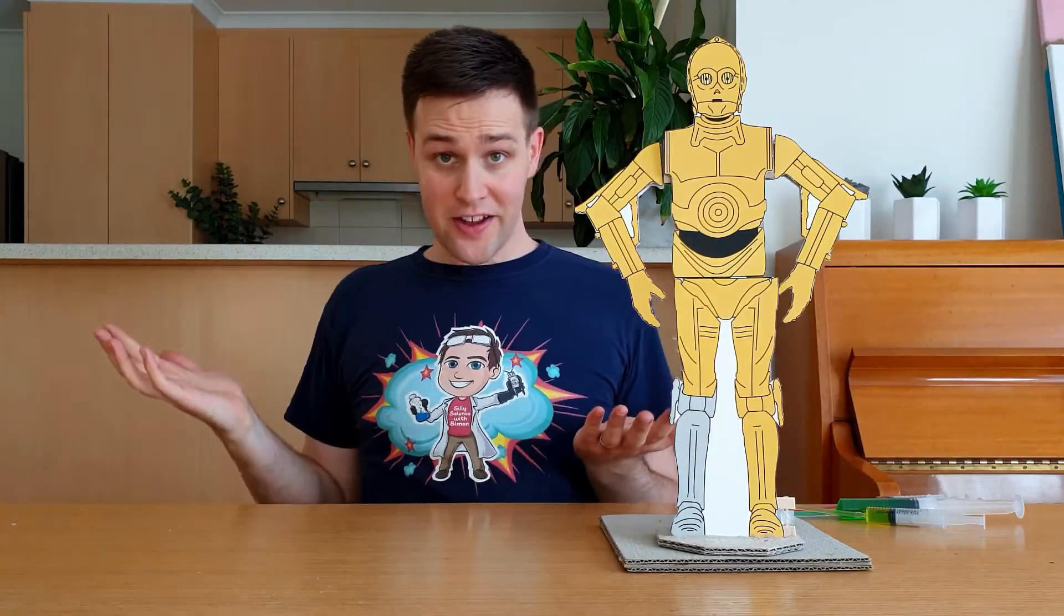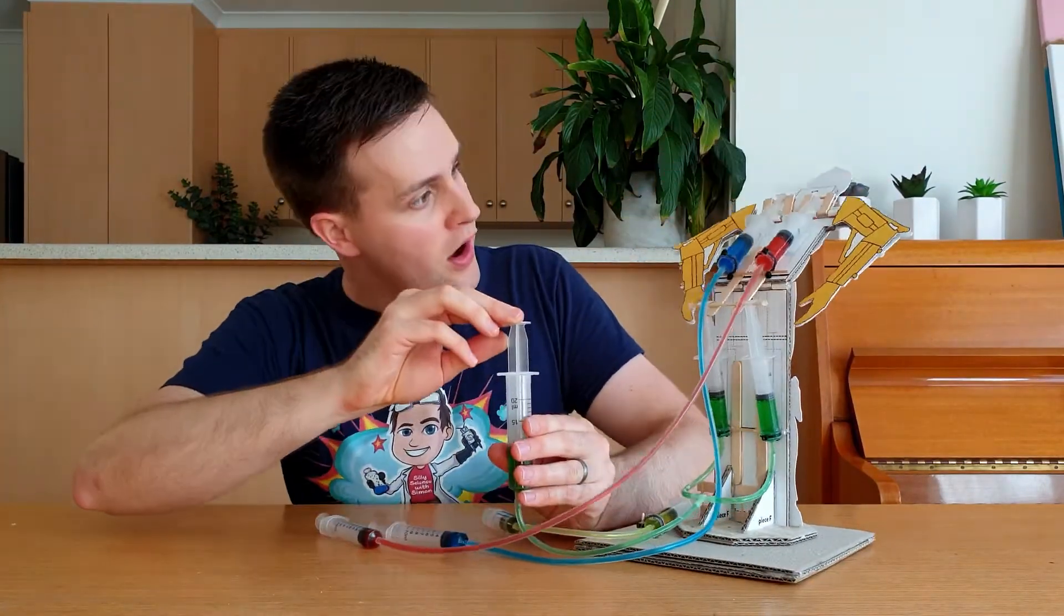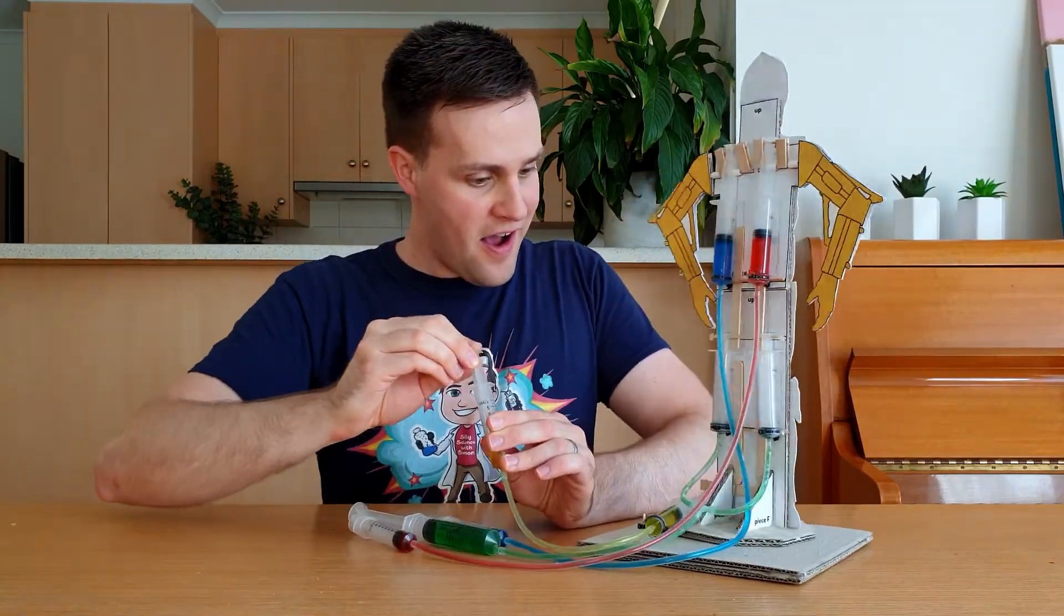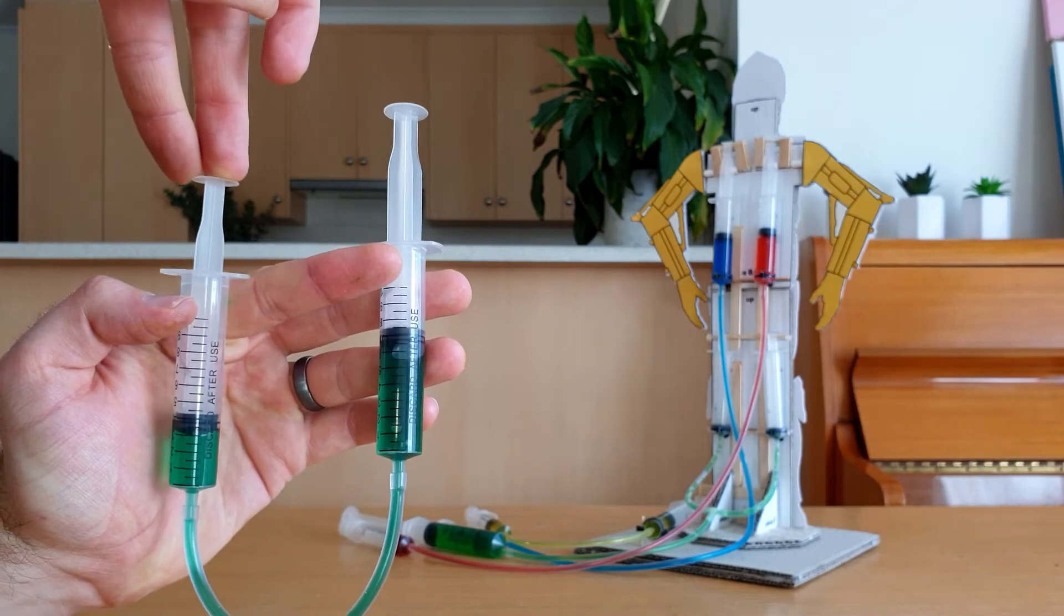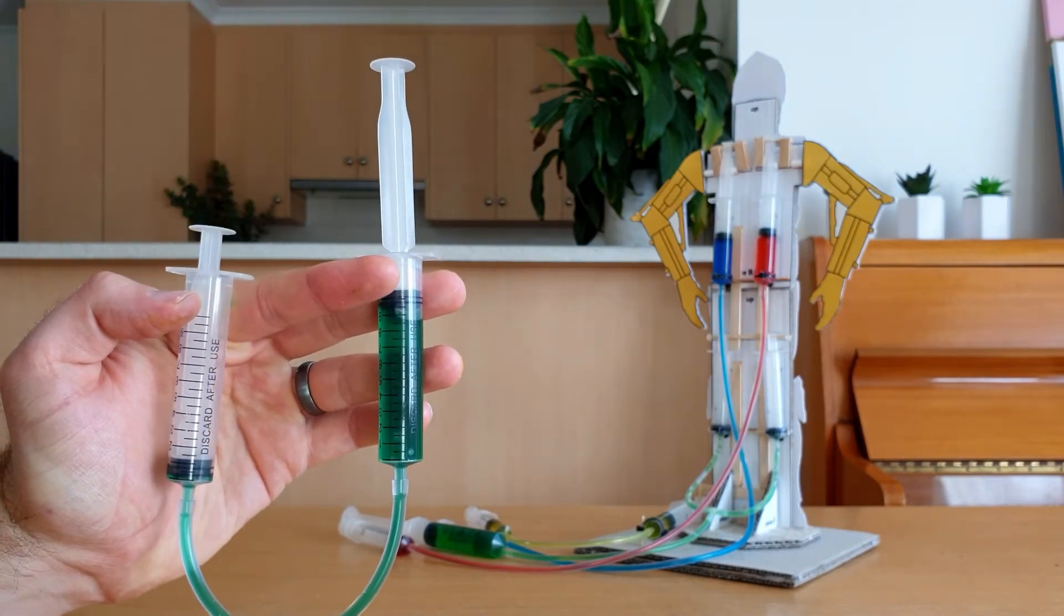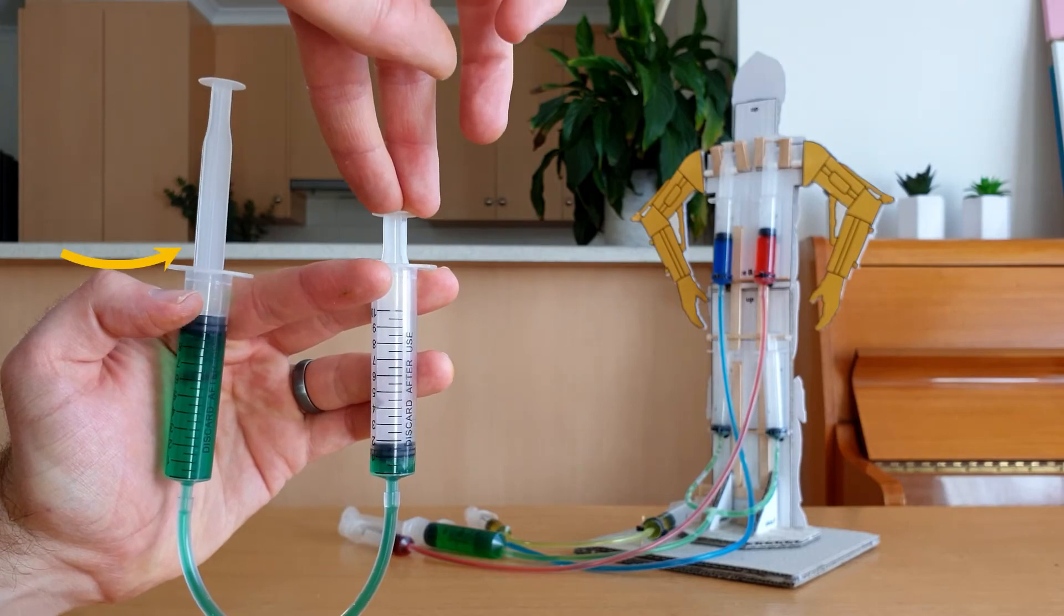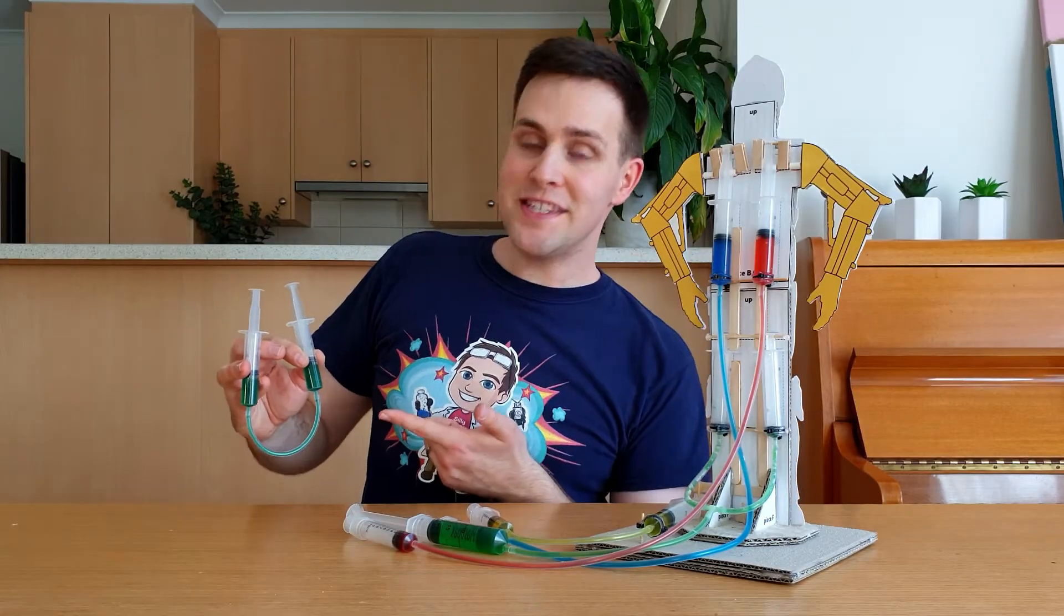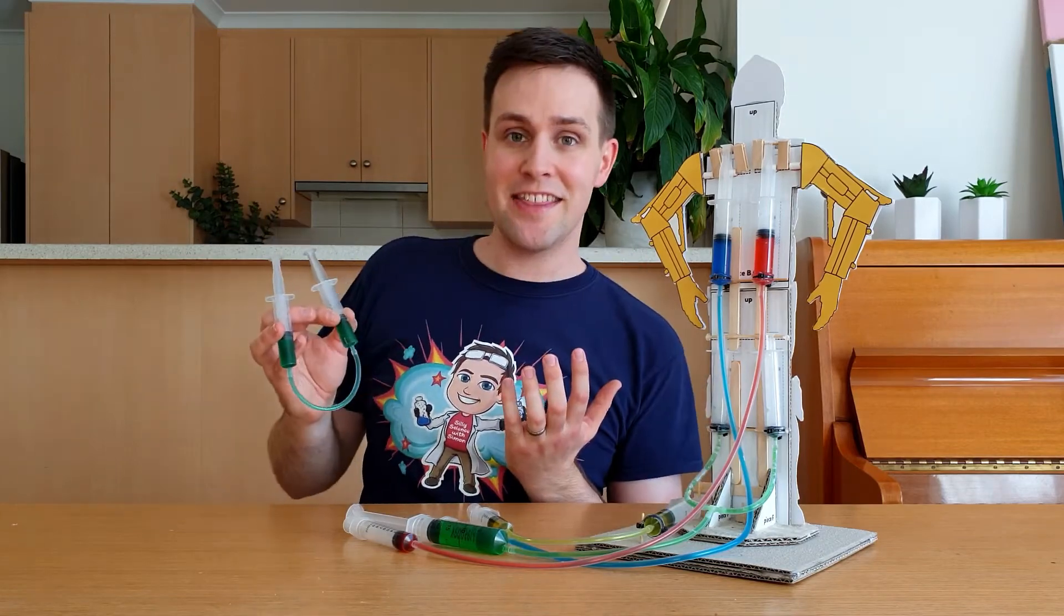So how does he work? This design uses 4 hydraulic systems to move the different parts of C-3PO. A hydraulic system is a way of moving a pressure from one place to another. When I apply a pressure to this plunger, an equal pressure is applied to this plunger, making it move. We use liquids in a hydraulic system because they're much harder to compress, or squish together, than gases.